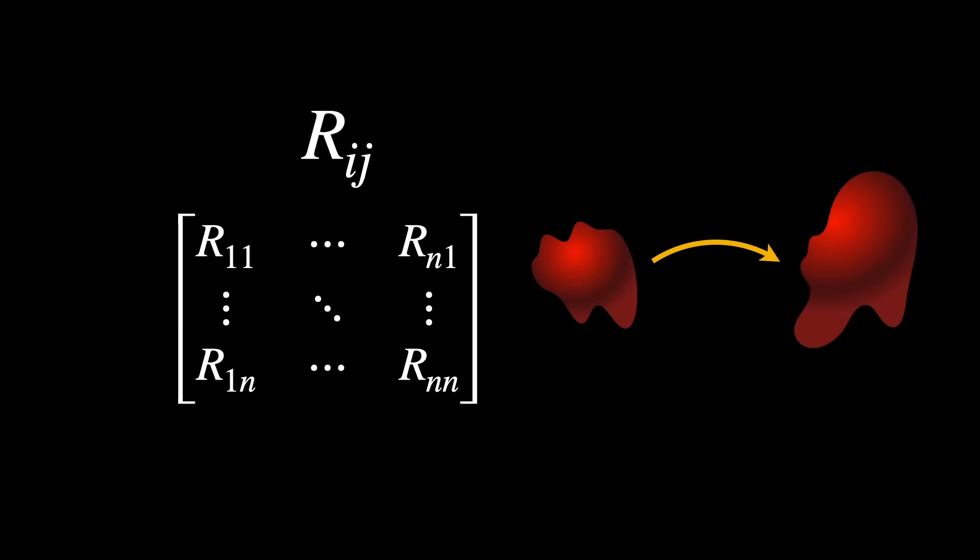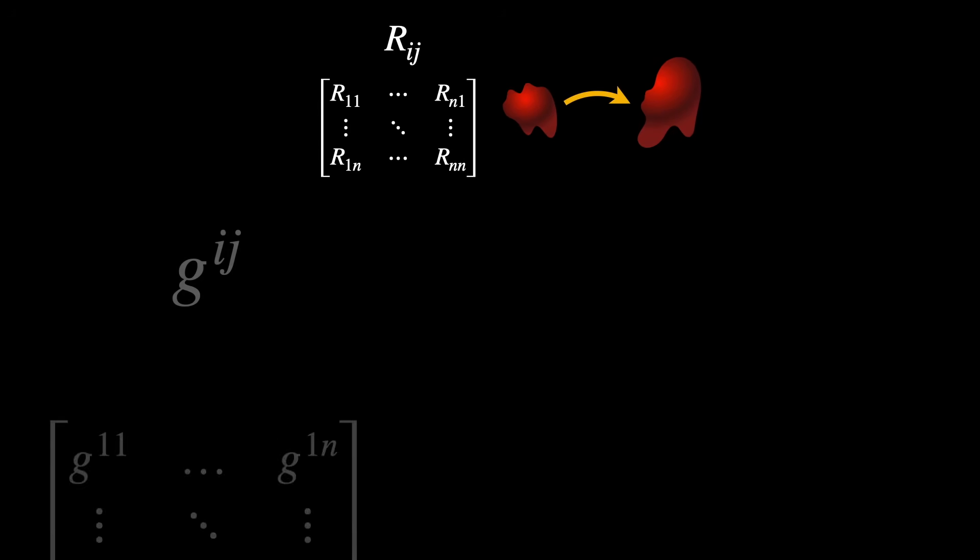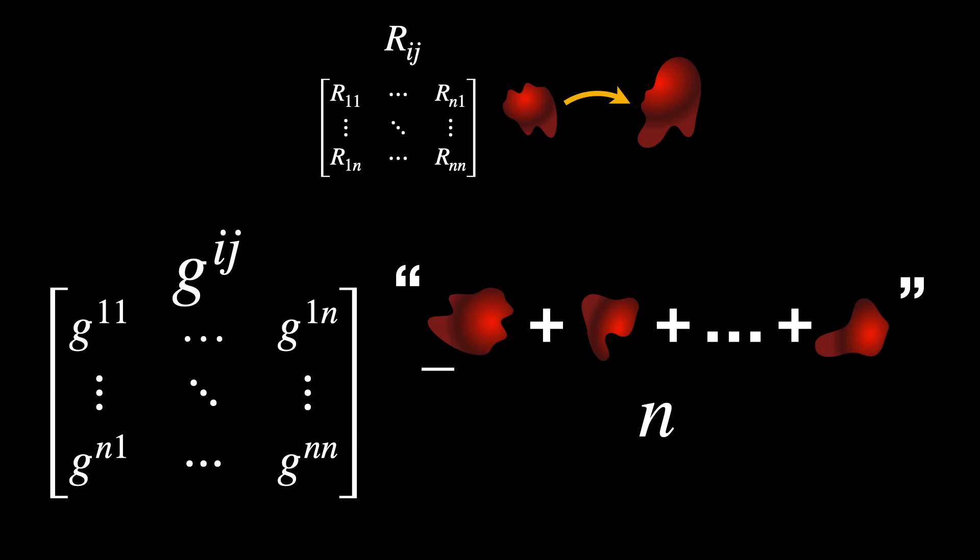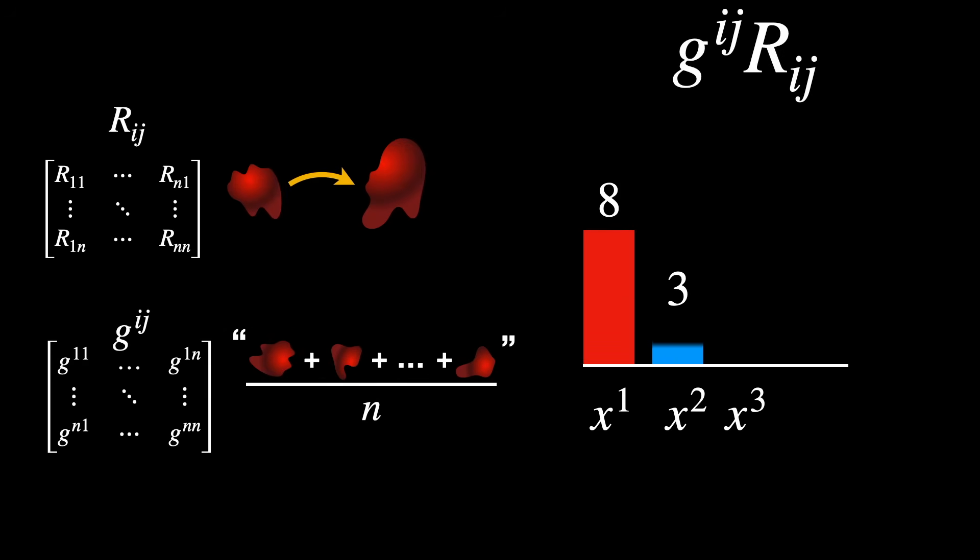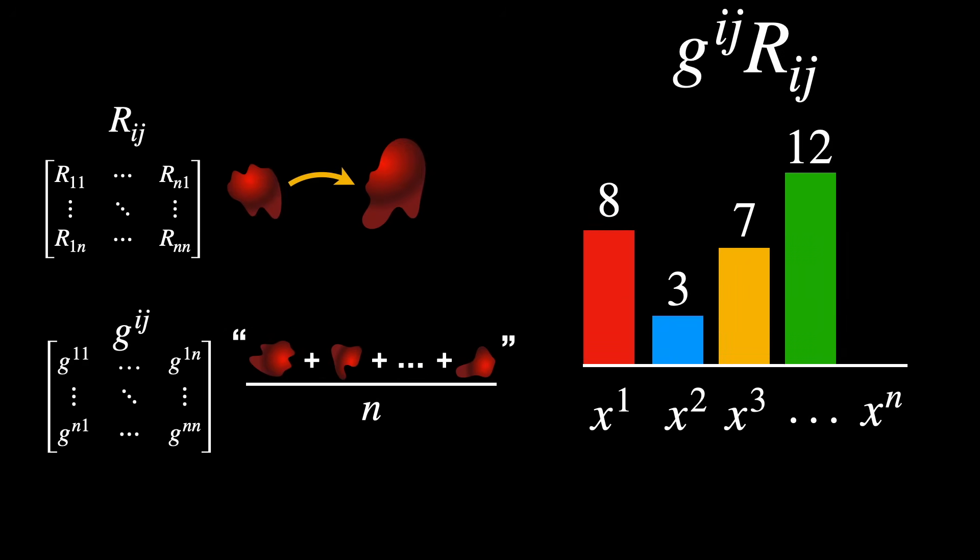In conclusion, the Ricci matrix tells us how much the space curves and distorts volumes when moving in a specific direction. The inverse matrix Gij tells us how to average these directions and provide the geometric tool for doing so. The product between the inverse metric and the Ricci tensor gives a sort of weighted average of curvature in all directions.